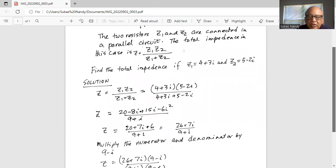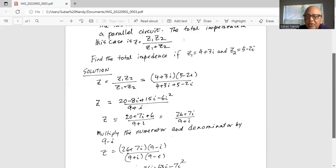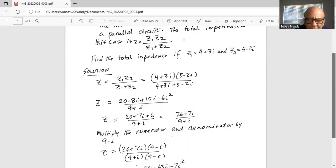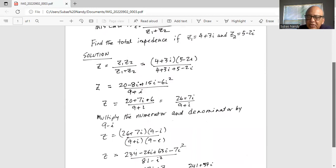So in the numerator, we know i squared is minus 1. So it is 20 plus 15 minus 8 is plus 7i plus 6, because i squared itself is minus 1. So minus 6 times minus 1 is plus 6. In the numerator, we have 20 plus 6 which is 26 plus 7i divided by 9 plus i in the denominator.